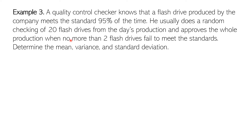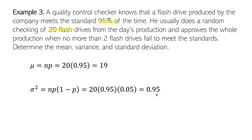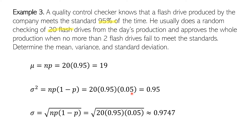Third example for mean/variance/SD: returning to the quality control problem. The mean here is 19 — meaning on average, 19 out of 20 flash drives pass the quality control. That's very high, consistent with the 95% standard. The variance is 0.95, calculated by substituting n=20, P=0.95, and Q=0.05 — remembering that 0.95 plus 0.05 equals 1. The standard deviation is 0.9747.